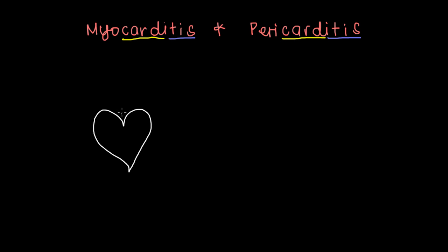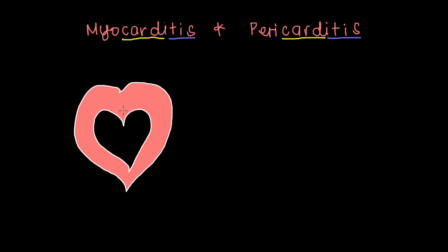There are three layers to the heart. There's one inner layer and another layer on the outside. This inner layer — including everything on the inside — is the part of the heart that makes contact with blood as it's pumped through to the rest of the body. This is called the endocardium.